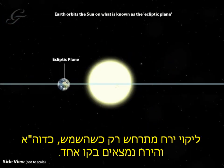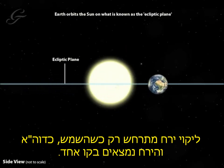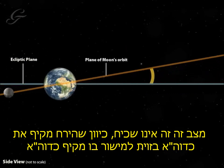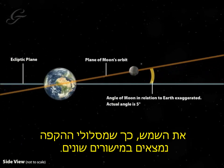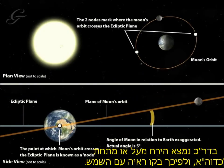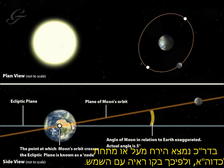A lunar eclipse can only happen when the sun, Earth and moon are directly in line. This does not happen very often, because the moon orbits the Earth at a different angle to the Earth's orbit of the sun, so their orbits have different planes. Usually the moon is either above or below the Earth, and therefore in sight of the sun.